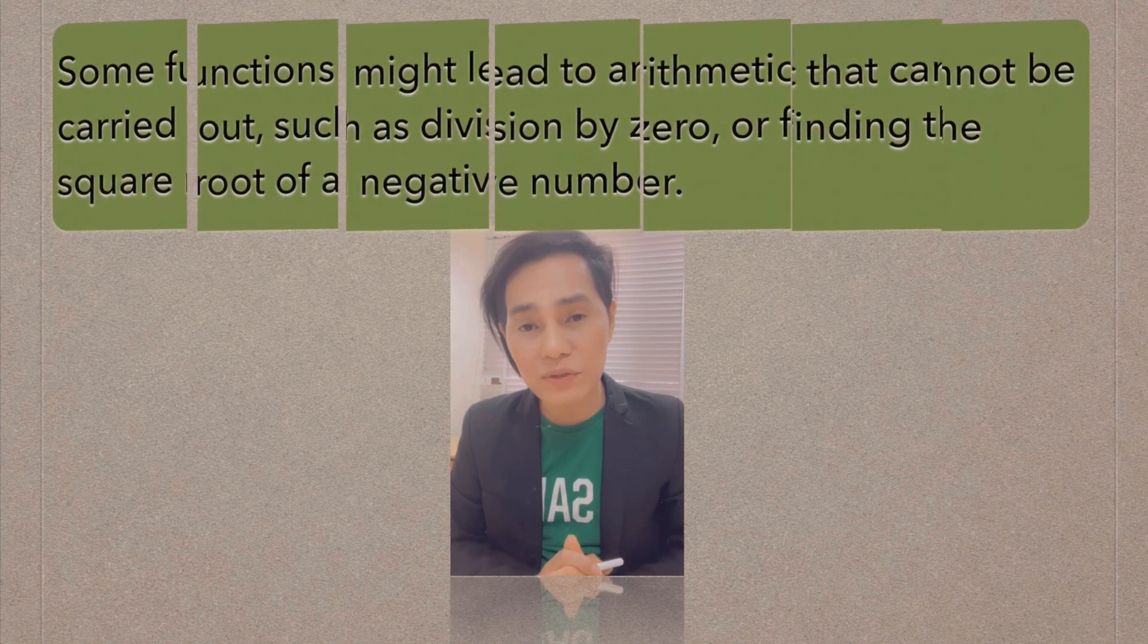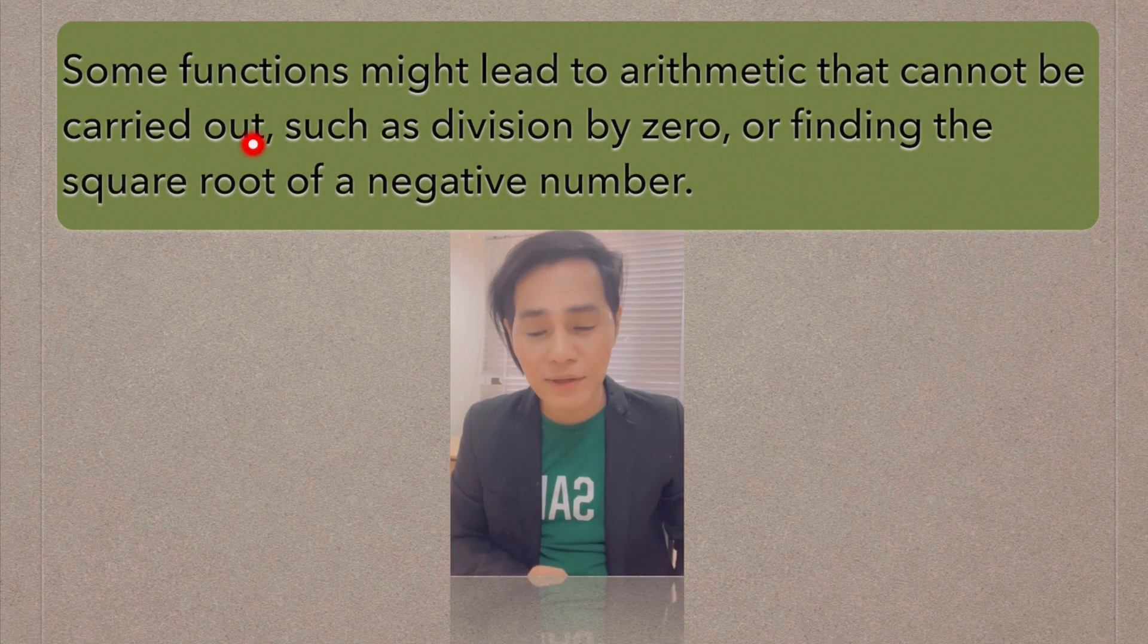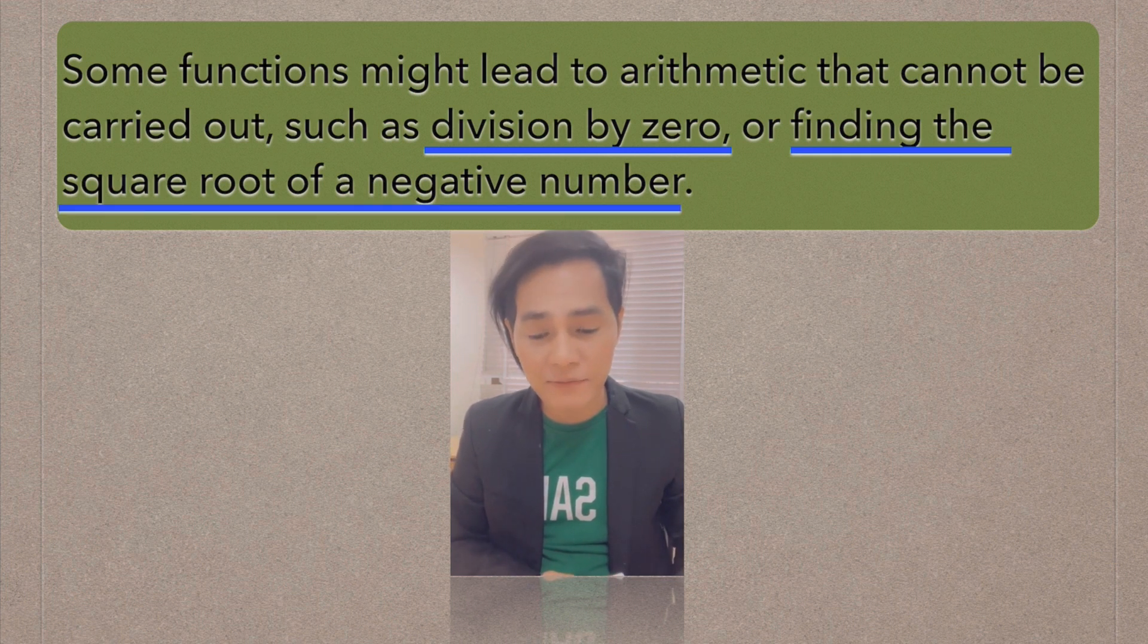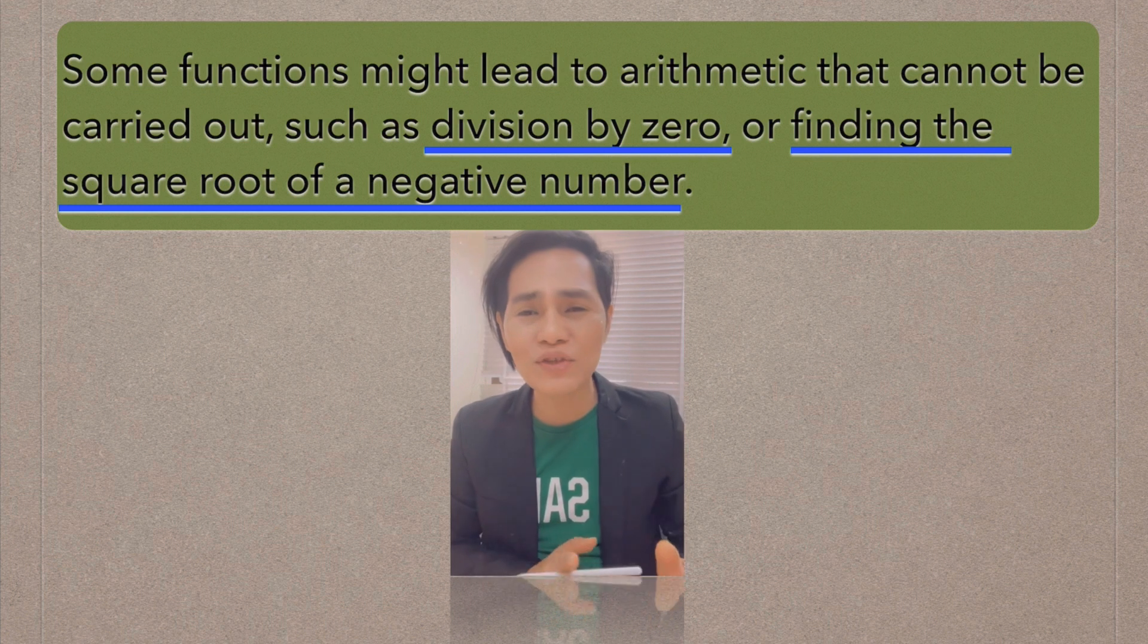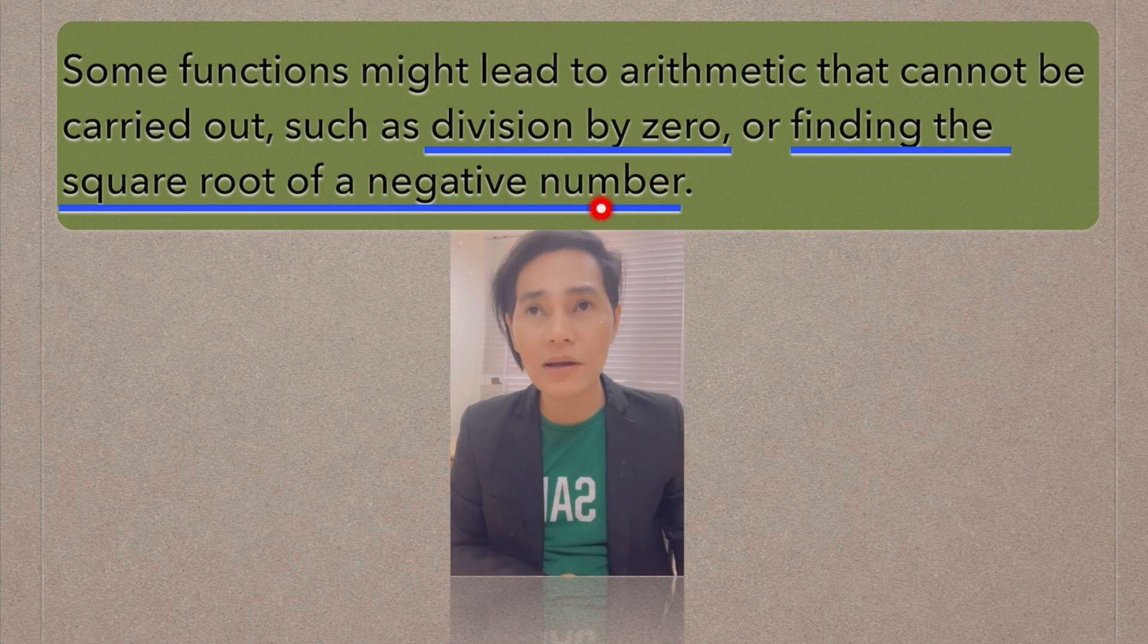I made mention of this earlier that some functions might lead to arithmetic that cannot be carried out, such as division by zero or finding the square root of a negative number. The question here is, what are these functions where we can represent this division by zero and finding the square root of a negative number?